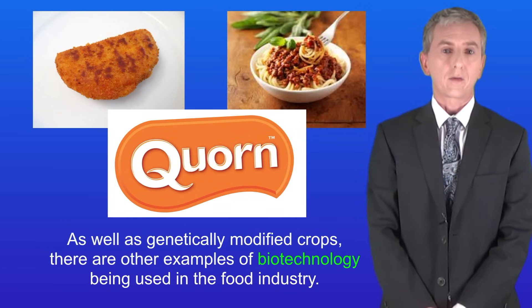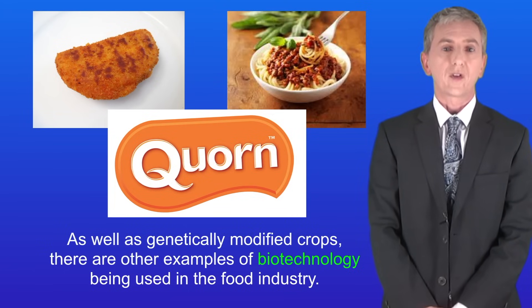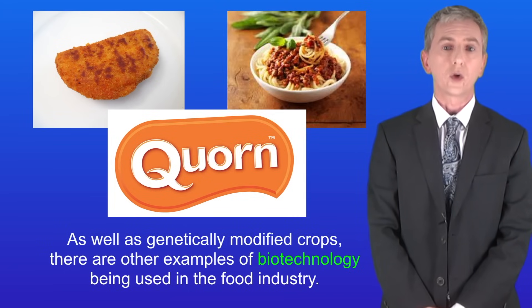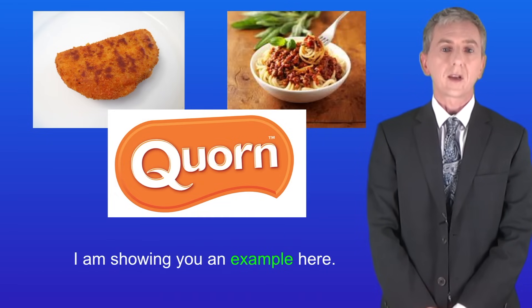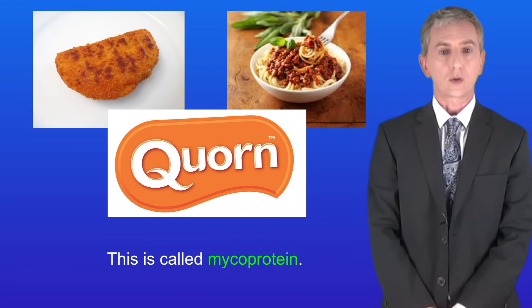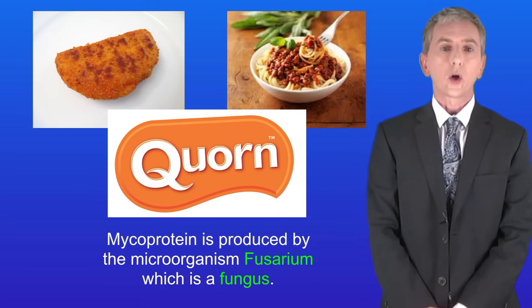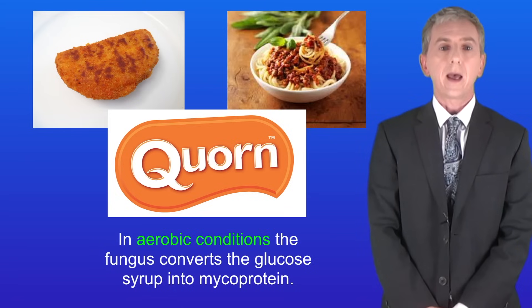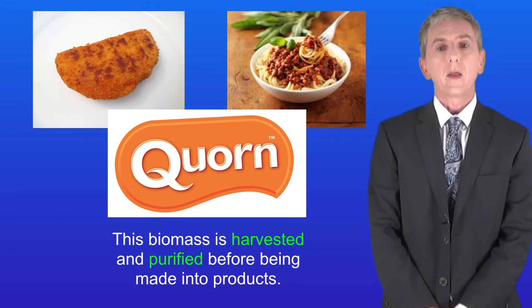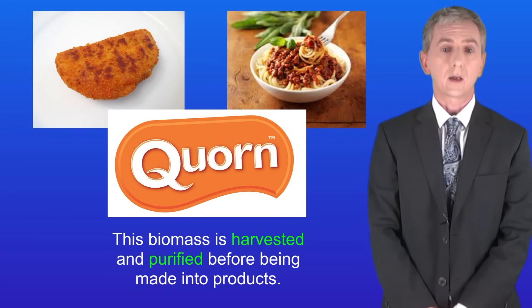As well as genetically modified crops, there are other examples of biotechnology being used in the food industry, and one example is the use of microorganisms. This is called mycoprotein. Mycoprotein is produced by the microorganism Fusarium, which is a fungus. Fusarium is grown on glucose syrup in a fermenter. In aerobic conditions, the fungus converts the glucose syrup into mycoprotein, and this biomass is harvested and purified before being made into products.